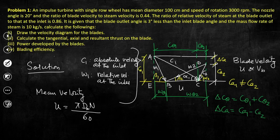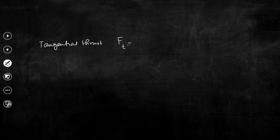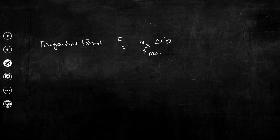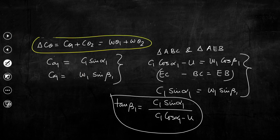Now returning to the problem: we need to draw velocity triangles, then calculate tangential, axial, and resultant thrust. The tangential thrust f_t equals m_dot_s × delta_c_theta, where m_dot_s is the mass flow rate of steam. Delta_c_theta equals w_theta1 plus w_theta2, which equals w_1 × cos(beta_1) plus w_2 × cos(beta_2).